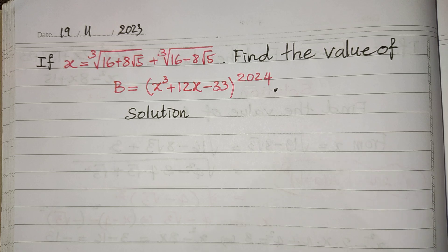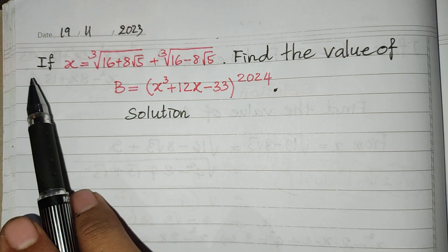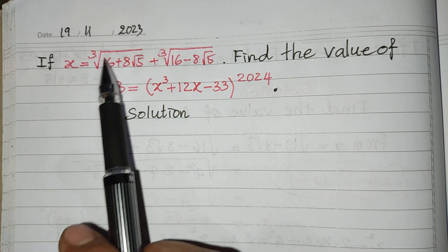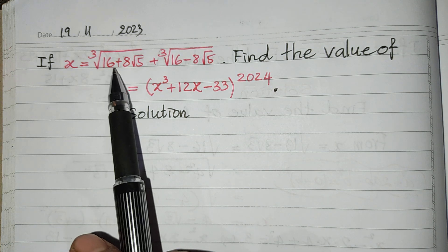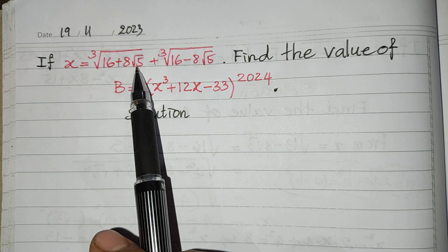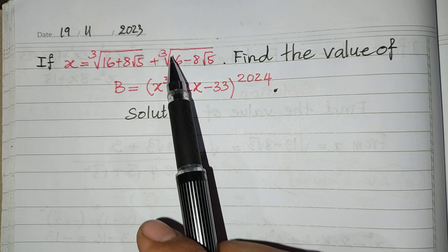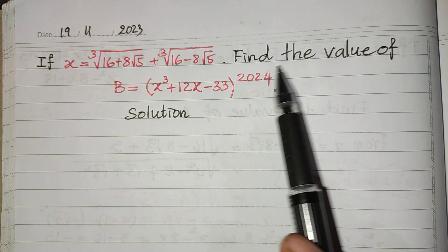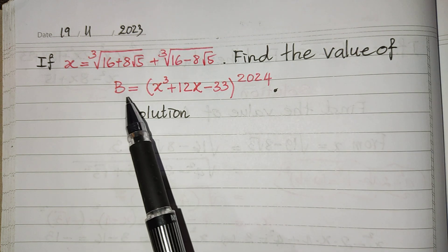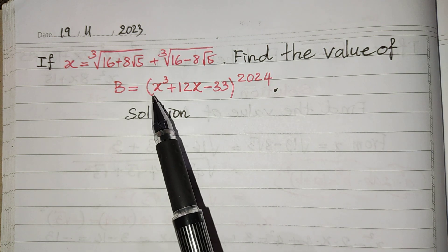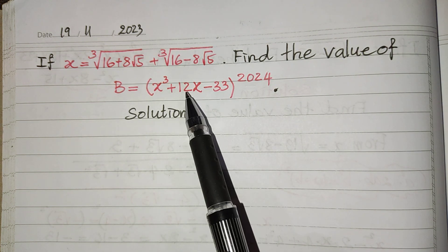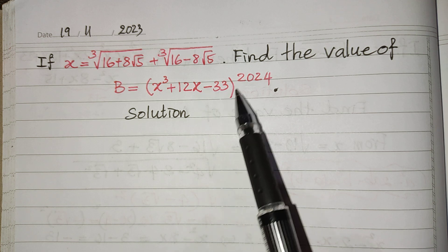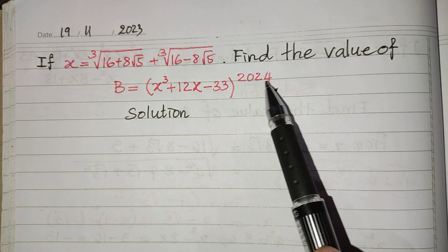Hello everyone. Welcome to my YouTube channel. Today I have one exercise. If h equals cube root of (16 + h√5) plus cube root of (16 − h√5), find the value of the expression b = h³ + 12h − 33, all to the power of 224.